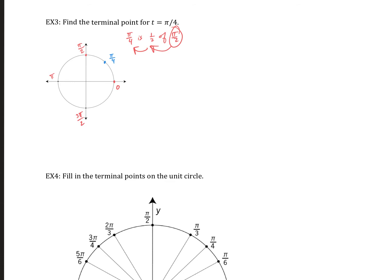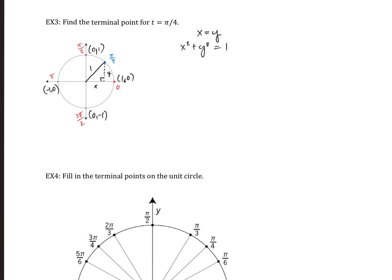We don't really know any of the other coordinates except for the main ones: (1,0), (0,1), (-1,0), and (0,-1). So how will we find the other one? Let's use the concept with the triangle. We know the radius is 1, and it creates a right triangle with some y value and some x value. One nice thing here is that π/4 is perfectly in the middle — so our x and y values are actually going to be the same. We also know x² + y² = 1.